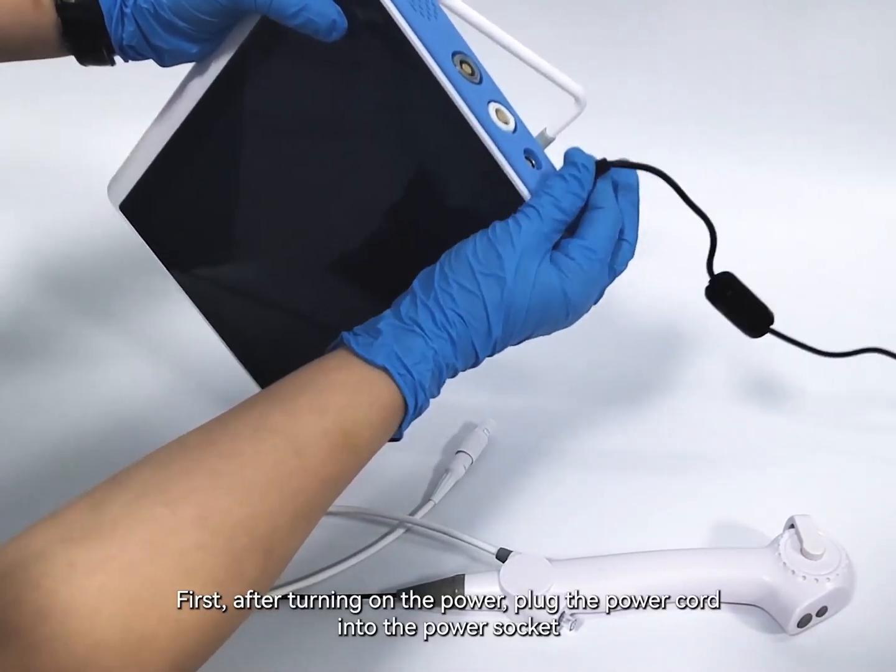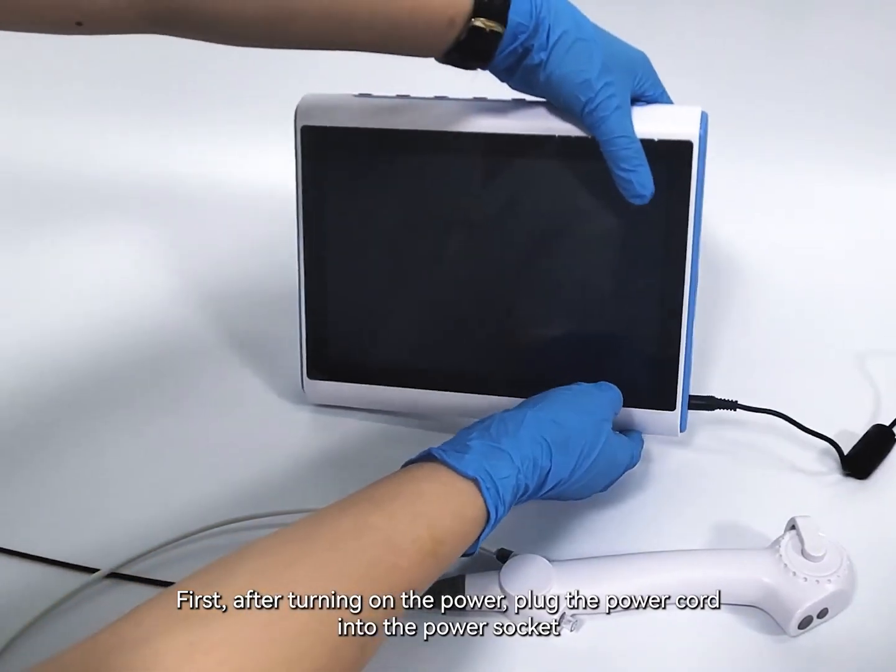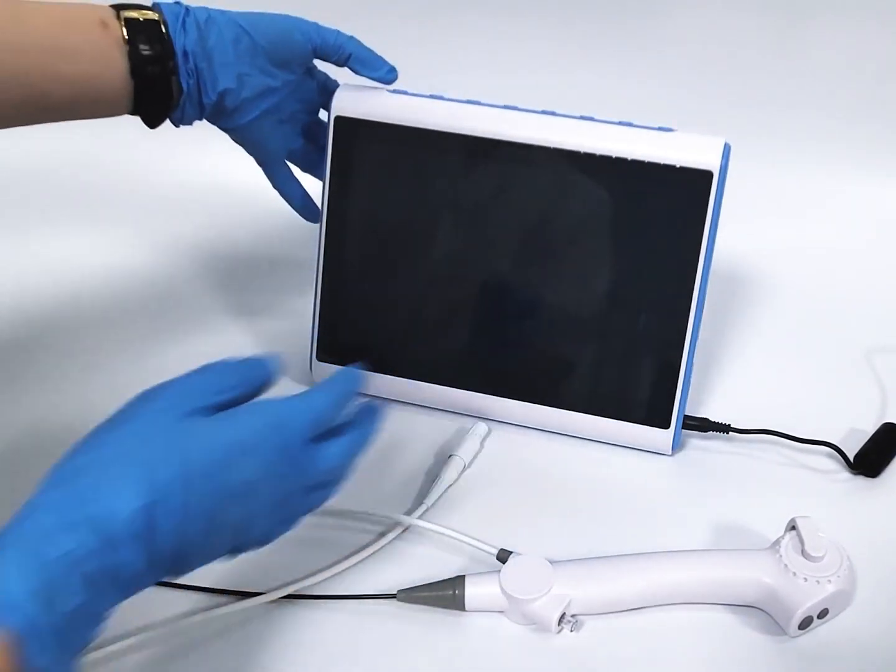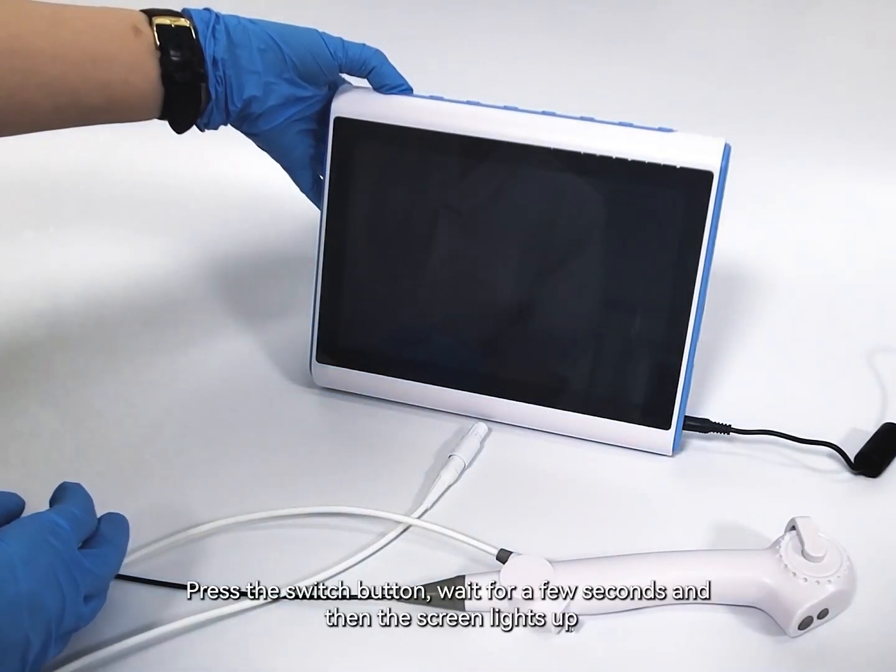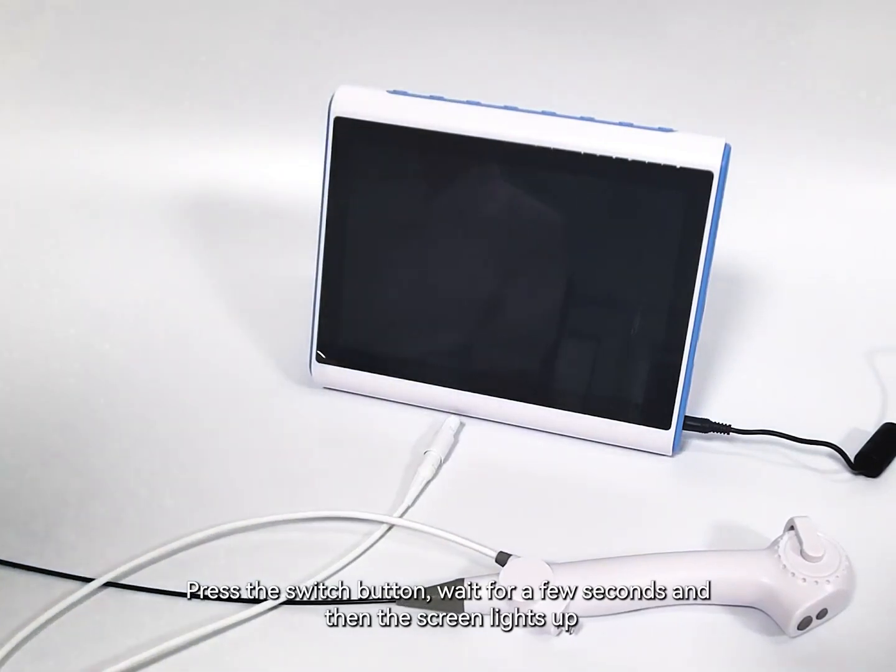First, after turning on the power, plug the power cord into the power socket. Press the switch button, wait for a few seconds and then the screen lights up.